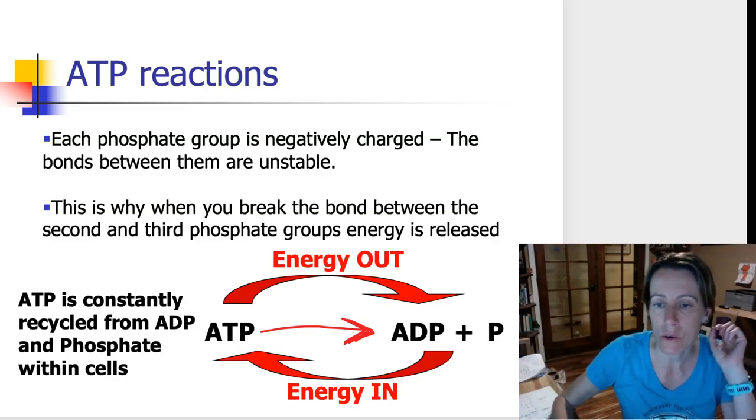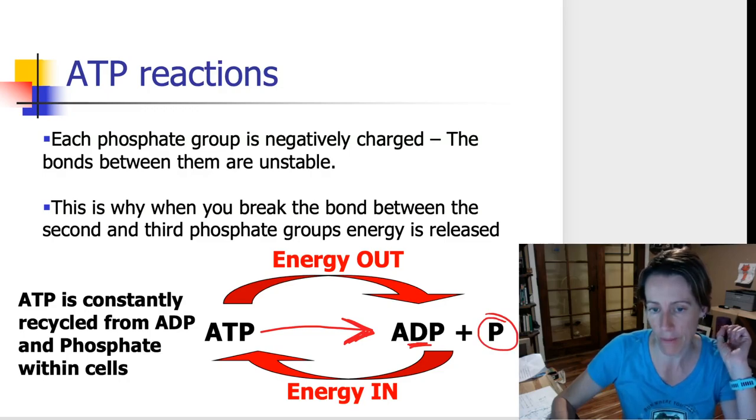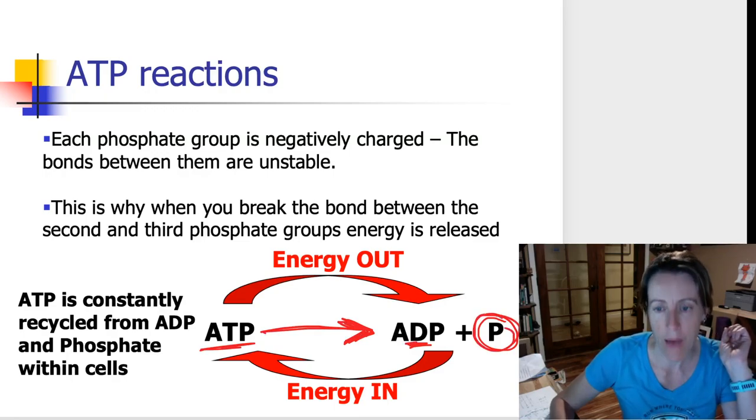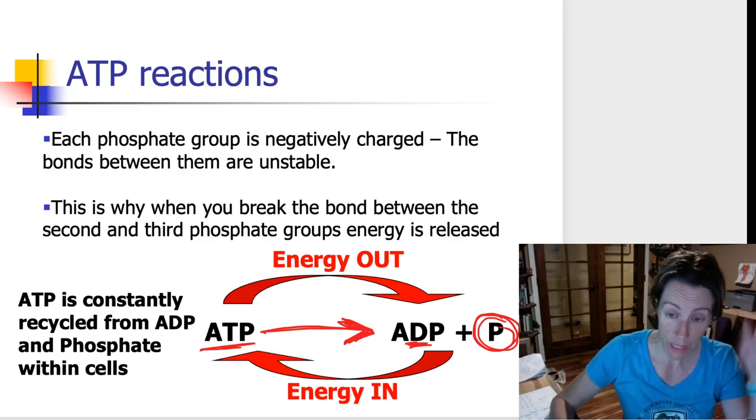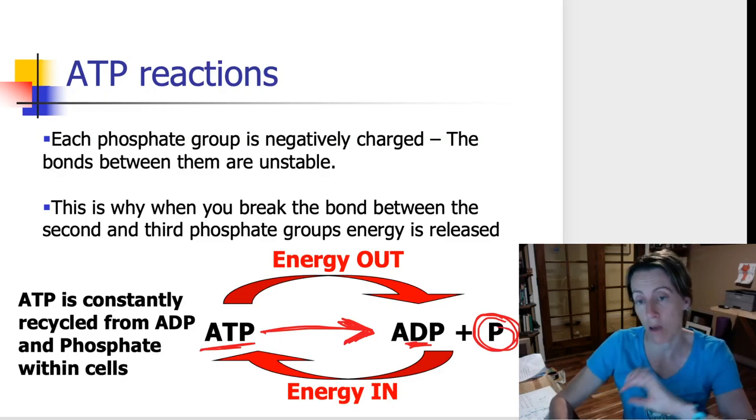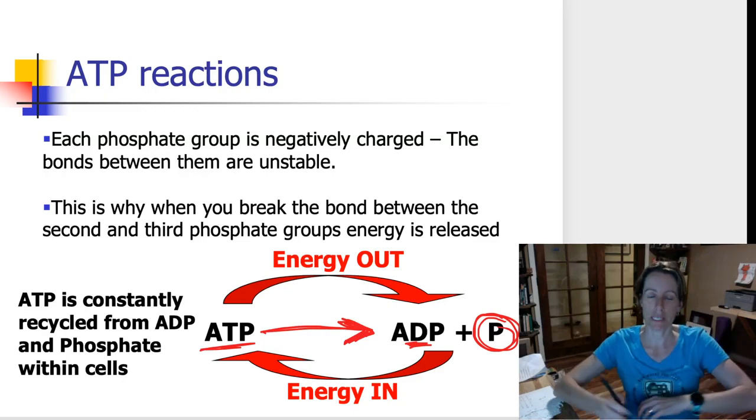And that is called adenosine diphosphate. And then here's the third, the one that fell off. So ATP can be broken down to make ADP plus P. And when that last P gets broken off or comes off, energy is released.